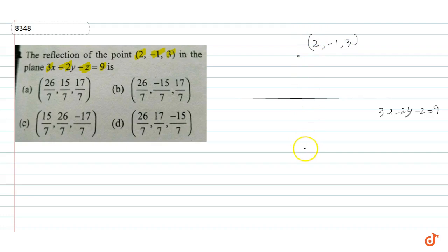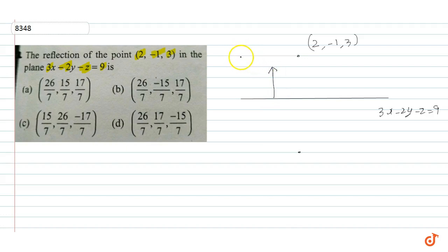For the mirror image of a point with respect to a plane, we use the line through the point perpendicular to the plane. The normal vector of the plane has coefficients giving direction ratios (3, -2, -1).